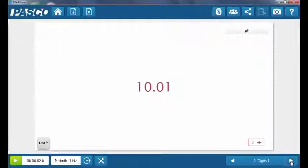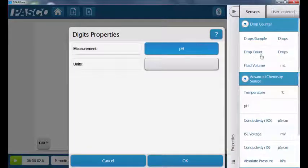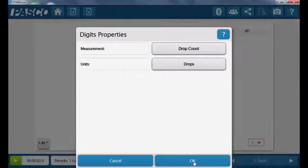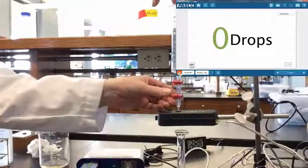Go to the digit screen in the SparkView software. If necessary, click on the measurement and change the measurement type to drop count. Press the record button so that the software will begin recording drops as soon as you open the bottom stop cock.